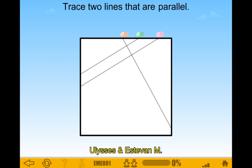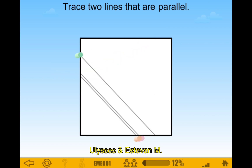Trace two lines that are parallel. Parallel means like they never touch, so those two lines are parallel. And the owls tell them, so that's cool. Two lines that are parallel — I want to see this one. These are parallel, but they're really, really, really close together.